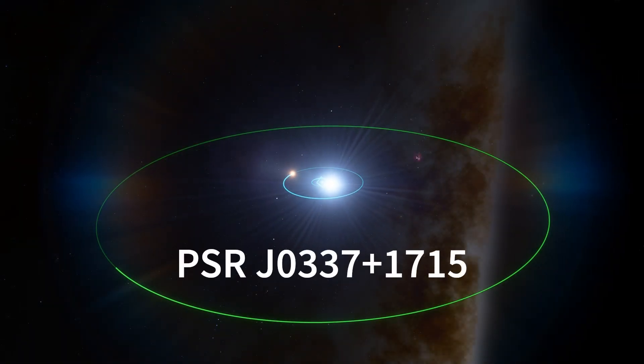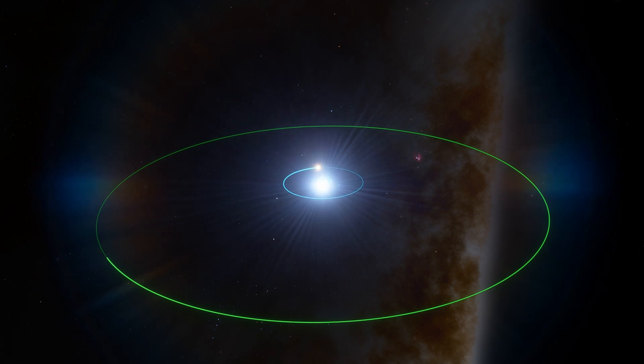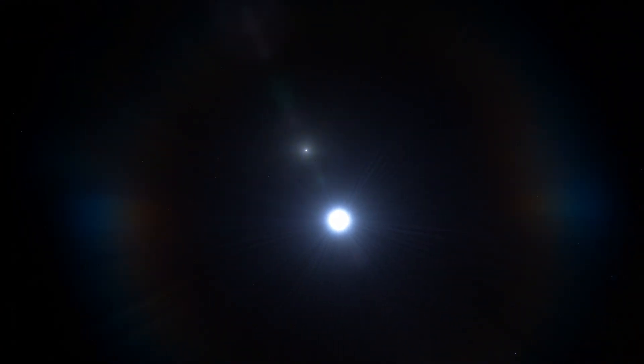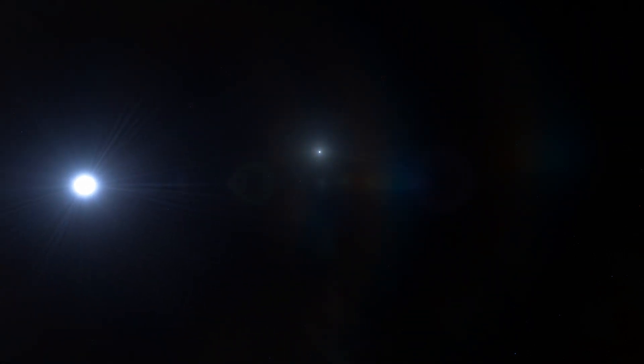This is PSR J0337-1715, a triple star system located 4200 light years away in the constellation of Taurus. It consists of a millisecond pulsar spinning nearly 366 times per second, orbited by a very low mass puffy white dwarf in a tight 1.63 day orbit.